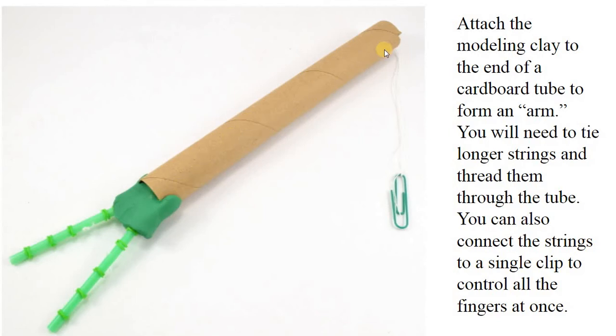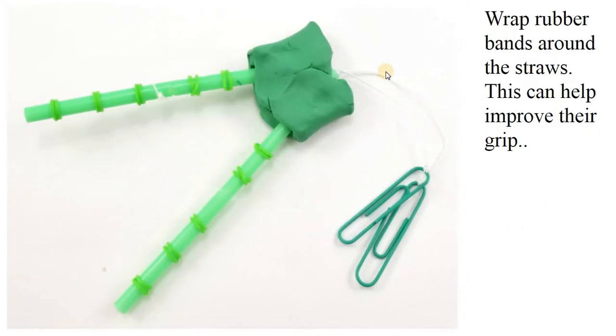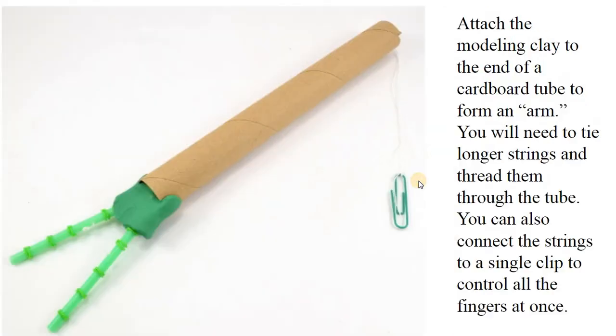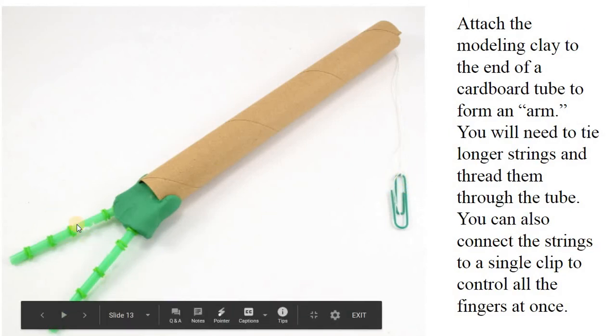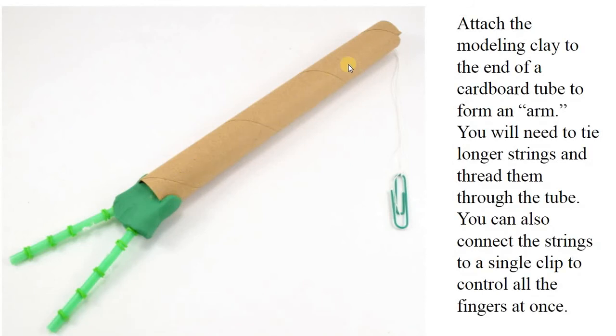Here's where you get the cardboard tube. Once you get ready to do this, the initial string that you used is not going to be long enough to go down the cardboard tube. So what you do is you tie these ends to a longer piece that'll be able to allow it to go through the tube. And this is the arm. You're going to need to tie longer strings and thread them through the tube. And then you could connect the strings to a single paper clip if you like, or have two to control one at a time. The key here is to extend the string to come out through the arm and you get the idea of what it's going to look like.